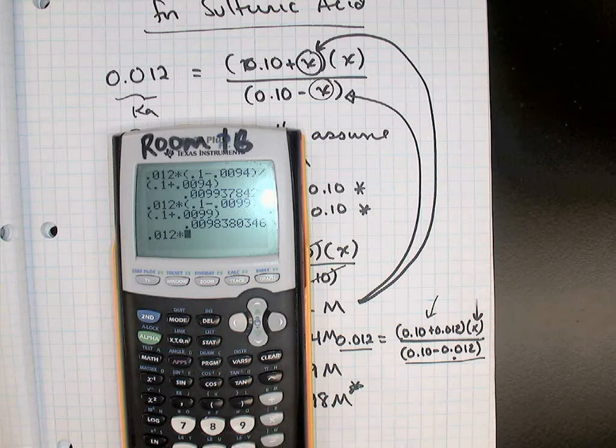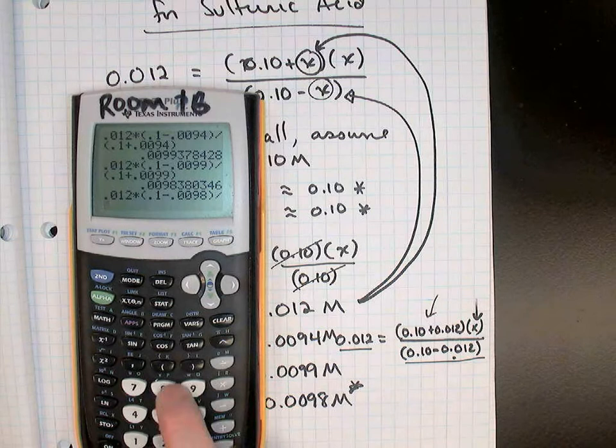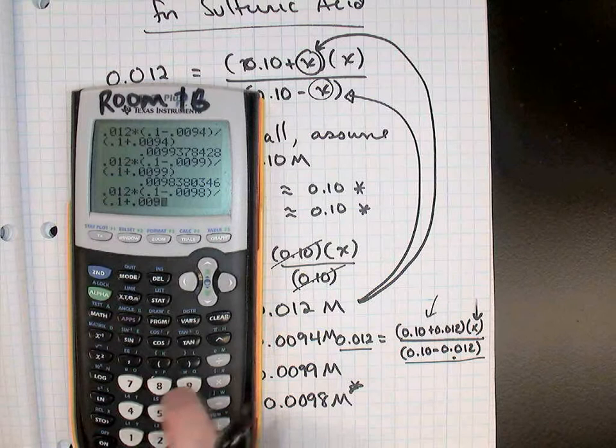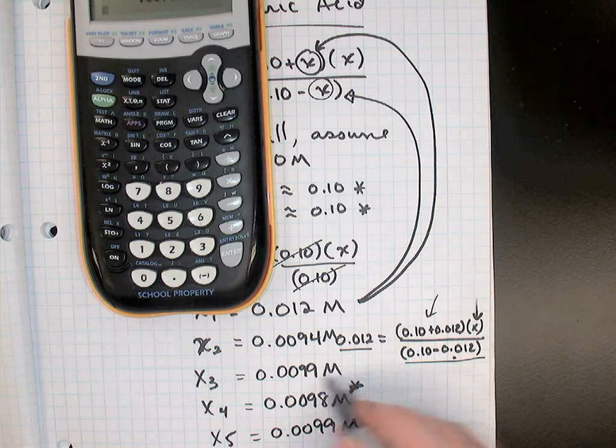Let me just show you that. I'm going to take 0.012 times bracket on the bottom, 0.1 take away my last answer which is 0.0098, close the bracket, divided by the brackets on top, open a bracket, 0.1 plus 0.0098, equals, and we get 0.00985, which essentially is the same answer, 0.0099.